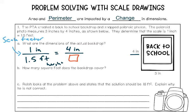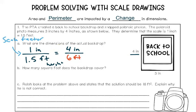To find that missing value, I need to use cross multiplication — multiply the two numbers across from each other and then divide by the number that's left. I got 6 — 6 divided by 1 is still 6. Make sure you label it in feet, because that is what the dimensions are in for the actual backdrop. It should match with the one going across from it. So 6 feet is the height of the actual backdrop.